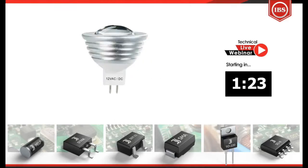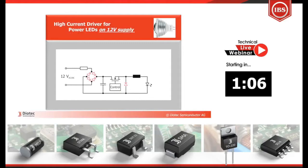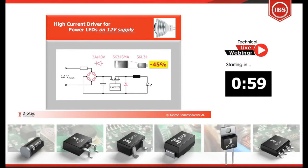Now we switch to power LEDs. It needs typically between 350 and 700 milliamps to let them shine as bright as the formerly used halogen spotlights. Such rather high driving currents still require traditional driving circuits. Lamp drivers for 12V AC or DC supply use a step-down converter. A 3-amp 40V Schottky is suitable both for the input bridge as well as the freewheeling diode at the output. A state-of-the-art device is the SK34SMA.